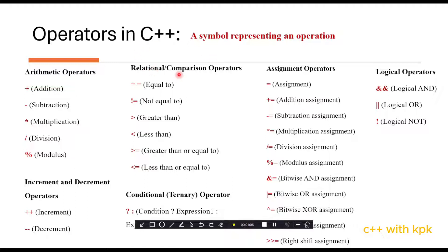The second category is what we call the relational or comparison operators. As the name defines, it helps to establish a relationship between two variables. You have the equal-to operator. In C++, equal-to is represented with a double equal sign. Any time you see a single equal sign, it means an assignment sign.